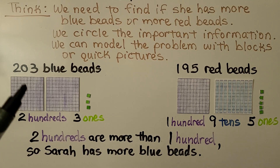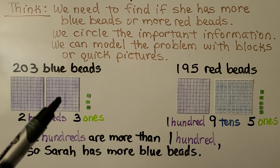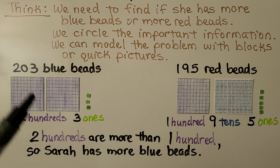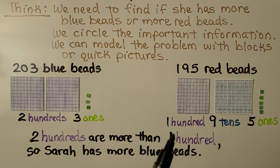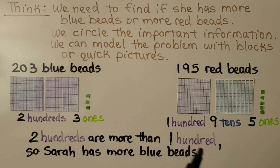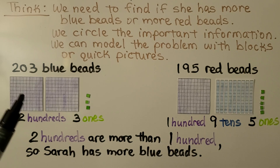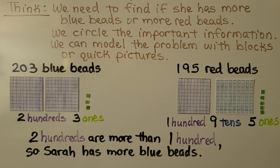We can use two flats of 100 and three ones for 203 blue beads. We can use one flat of 100, nine longs of 10, and five ones for 195 red beads. We can see there are 200s here and only 100 here. 200 is more than 100, so Sarah has more blue beads.